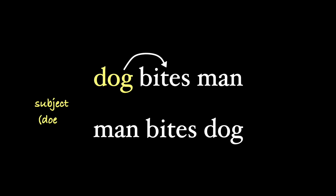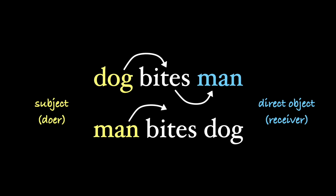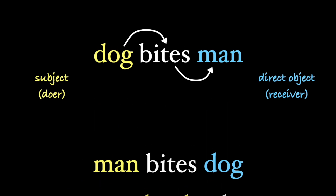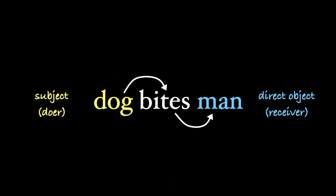So, 'dog bites man' is different from 'man bites dog.' In the first sentence, the dog is doing the action and the man is receiving it, while the roles are reversed in the second one. And since English loves to put its subject — the doer of the action — right before the verb, a sentence like 'a man the dog bites' still gives us the understanding that the dog is doing the action and the man is receiving it. The term for the noun receiving the action, or more technically, the person or thing immediately affected by the action, is the direct object. In our sentence, the man would be the direct object.